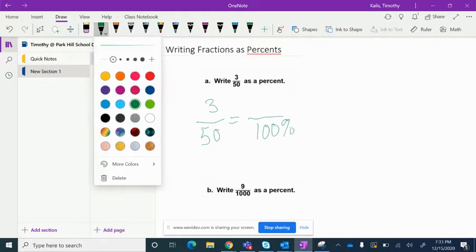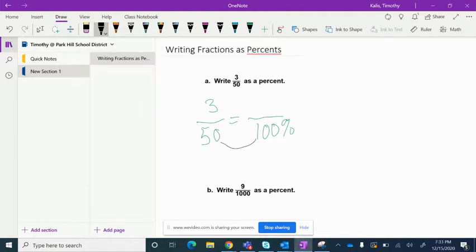Then we ask ourselves, what can we do to three fiftieths to get an equivalent fraction out of 100? Well, we notice we can multiply it by 2. So we are going to multiply the denominator by 2 and whatever we do to the denominator, we are going to do that to the numerator and so 3 times 2 is 6.